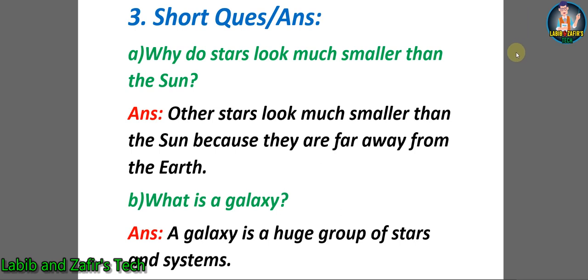Now students let's go through some short question answers. A. Why do stars look much smaller than the sun? Answer: Other stars look much smaller than the sun because they are far away from the earth.